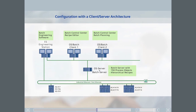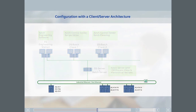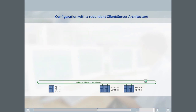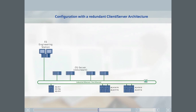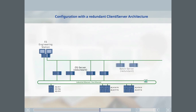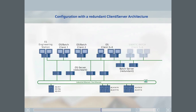In the third example, six operators will control and monitor the system at the same time. The engineering station is once again connected to the automation stations over industrial Ethernet. Due to the more exacting requirements, the two OS servers are set up redundantly. Both pairs of servers are connected to the terminal bus. A redundant OS server setup requires separate batch servers that are also set up redundantly in this case.